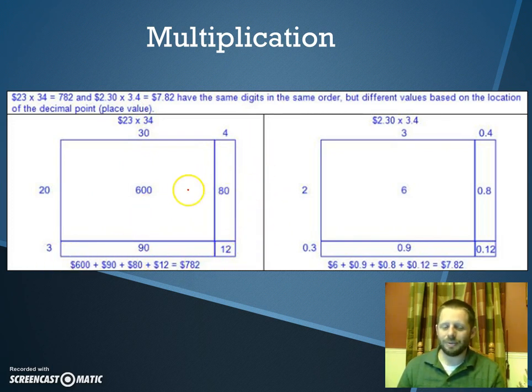The sum of those parts will equal the whole, or the result, the outcome. When you add those together, you get $782. Pretty cool trick, huh?